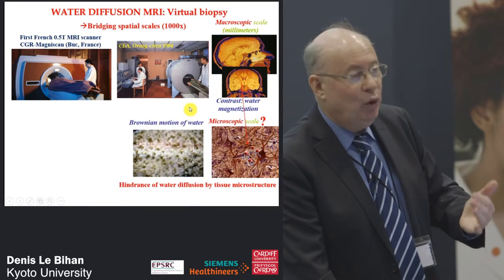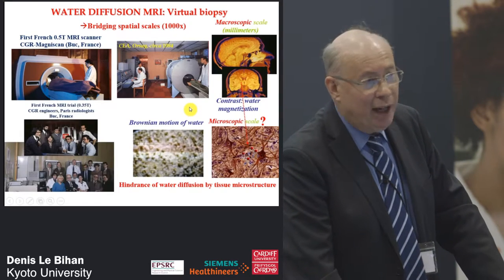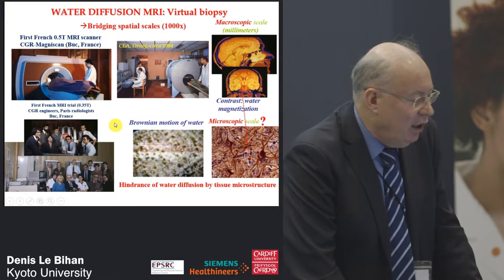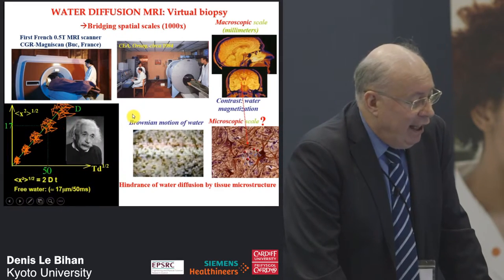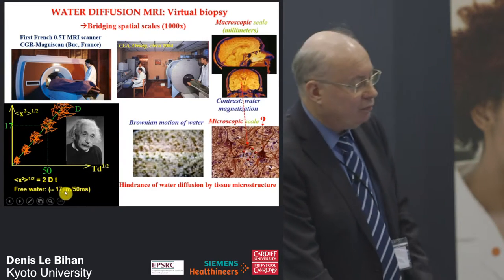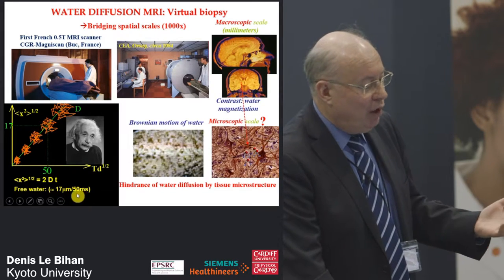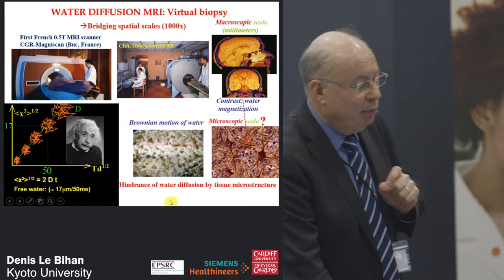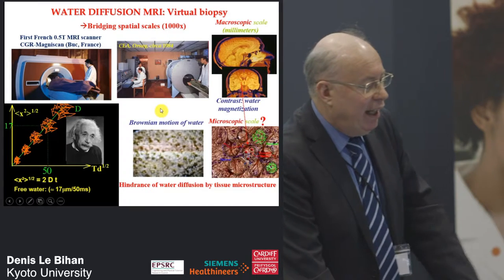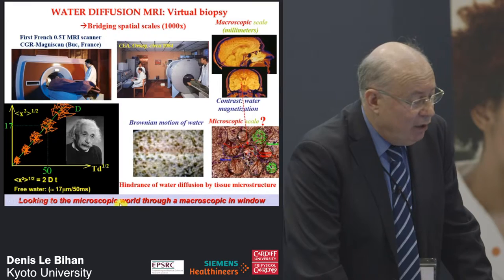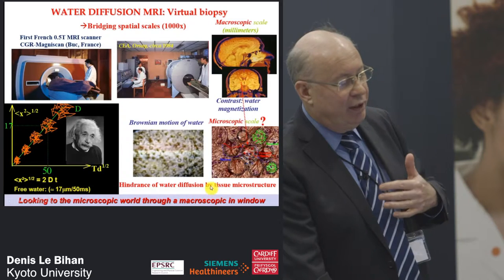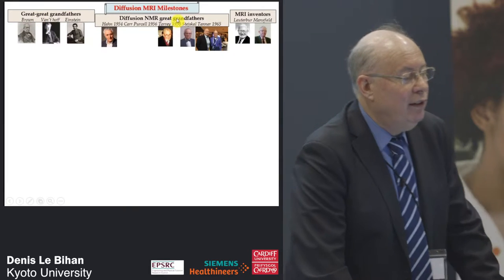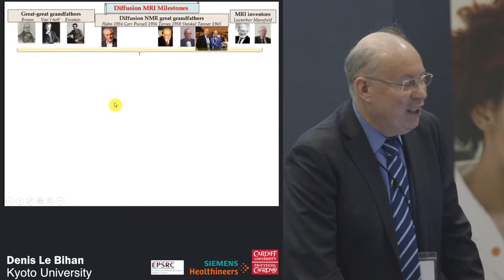The idea was to see how the hindrance of water diffusion by tissue elements would provide information about microstructure. The CGR people invited me to join them, and the radiologists welcomed this idea. Another piece of luck: if you take Einstein's equation for diffusion at brain temperature with the diffusion times we use, the displacement of water molecules is a few micrometers — the right range to probe tissue for medical applications. The idea was to have information in the microscopic world from macroscopic image resolution.